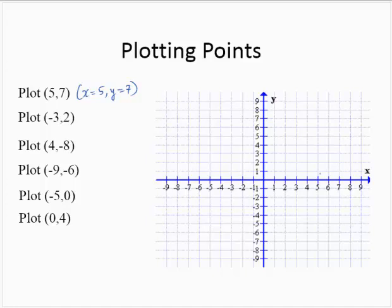x equals 5 here, but also on every point on this vertical line. y equals 7 on every point on this horizontal line. So the point where they intersect is the point (5, 7). So this point is (5, 7).